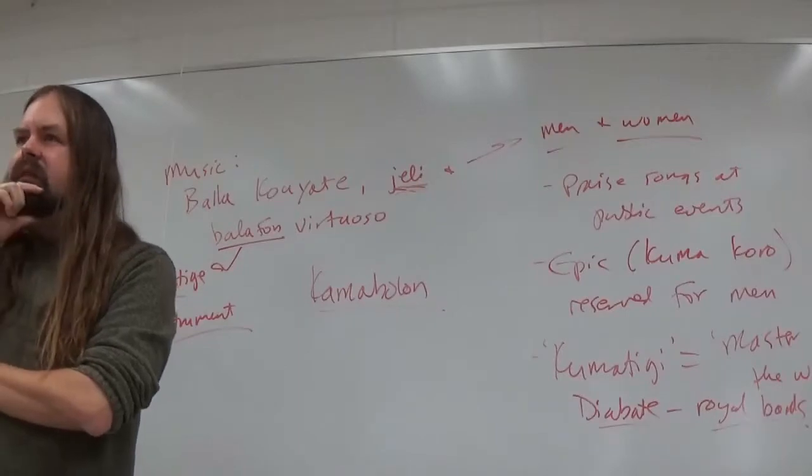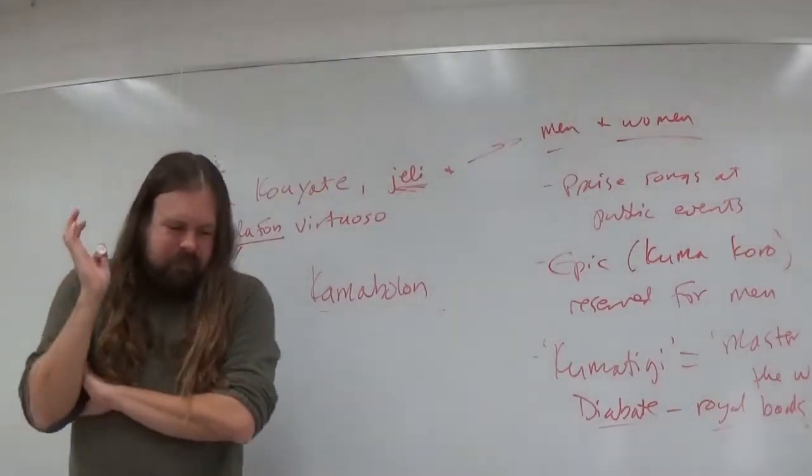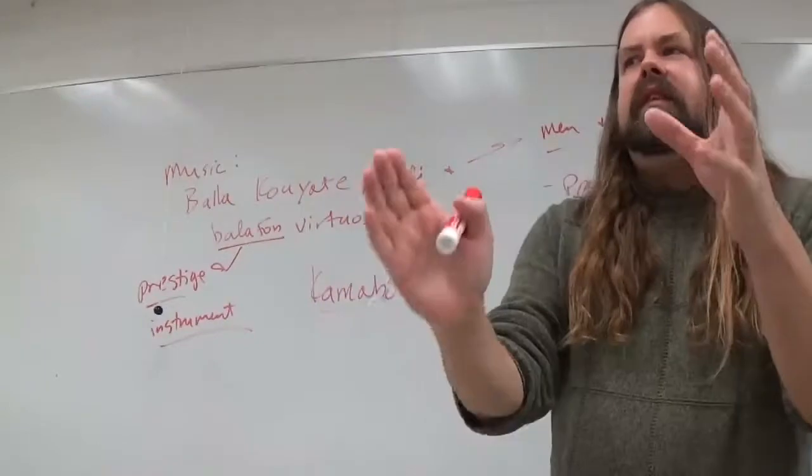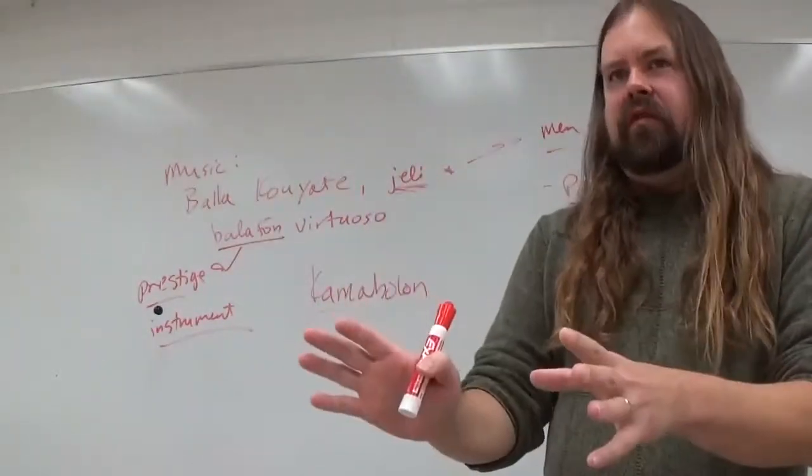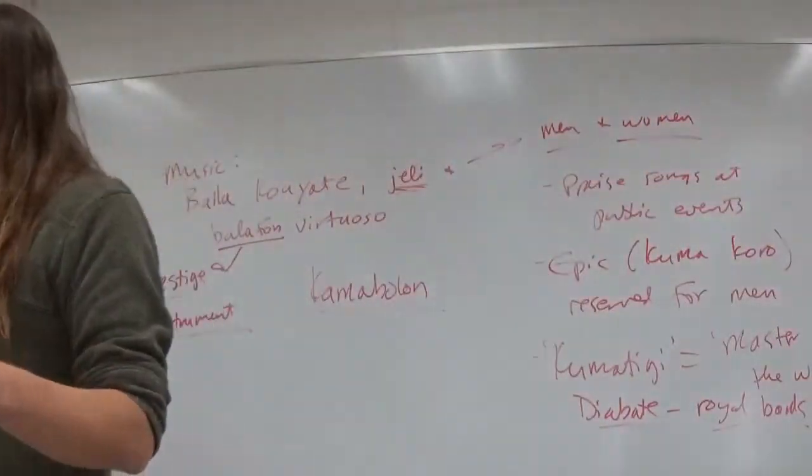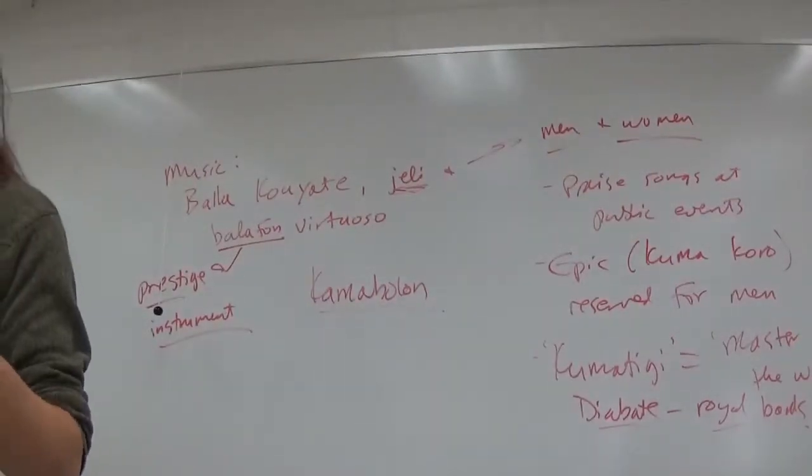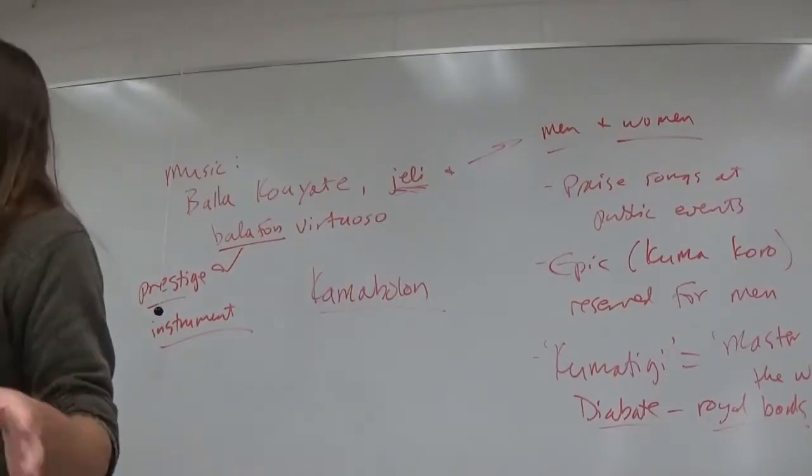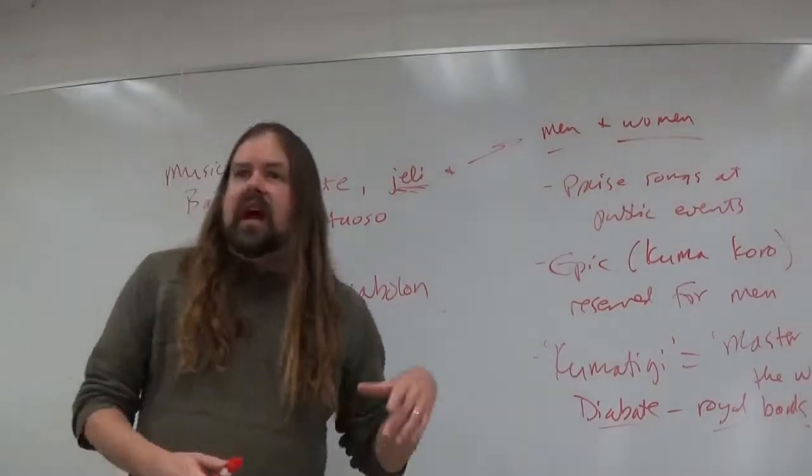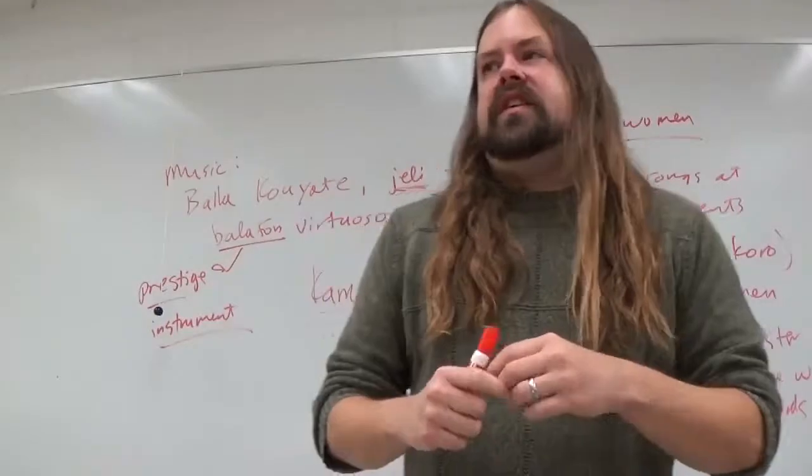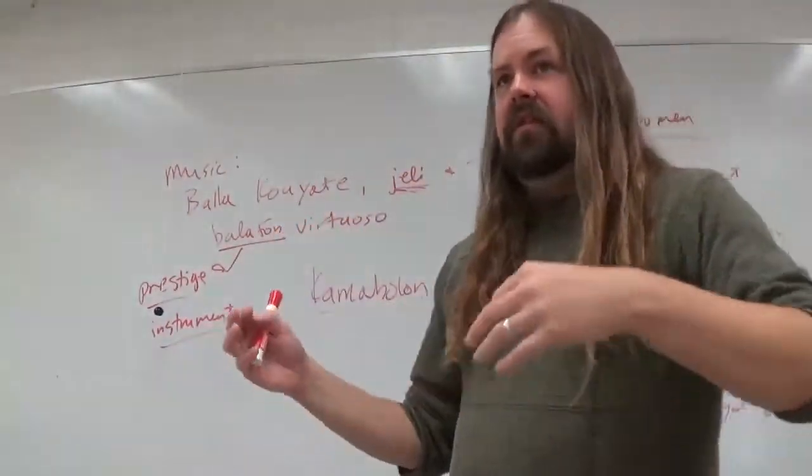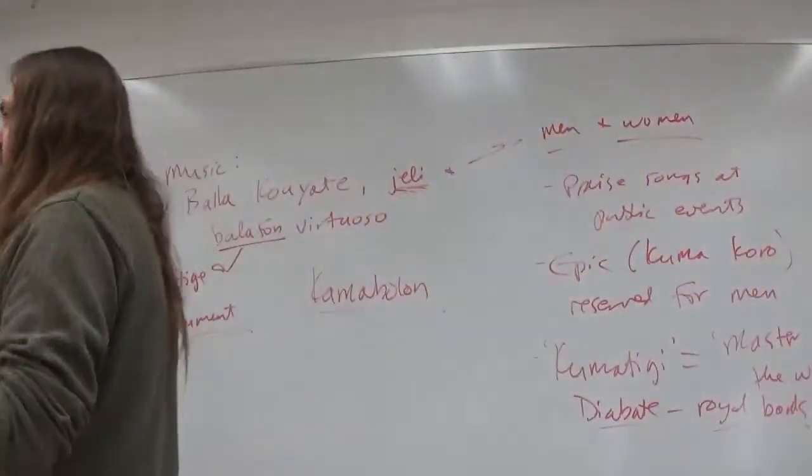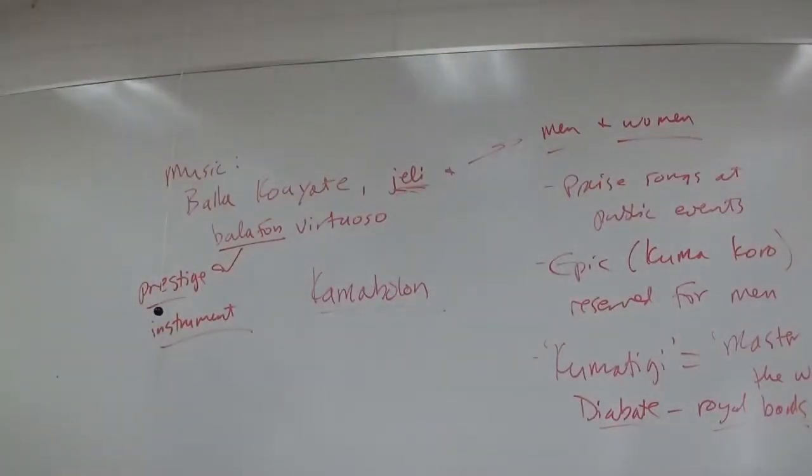But remember that this is a recording of a relatively recent performance of the epic, transcribed sometime in the 1990s. And the epic changes as time goes on. So once muskets are introduced into Africa, muskets start appearing in versions of the Sunjata story.